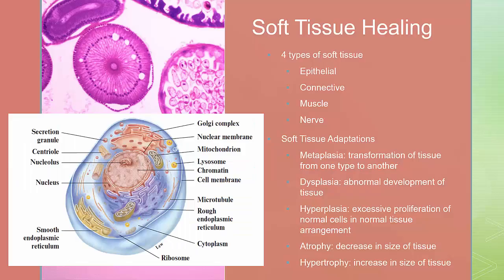Soft tissue healing. There are four types of soft tissue. Epithelial tissue includes the skin and vessels and organ linings. Connective tissue includes the tendons, ligaments, cartilage, fat, and blood. Muscle tissue includes skeletal, smooth, and cardiac muscle. And nerve tissue includes the brain, spinal cord, and nerves.